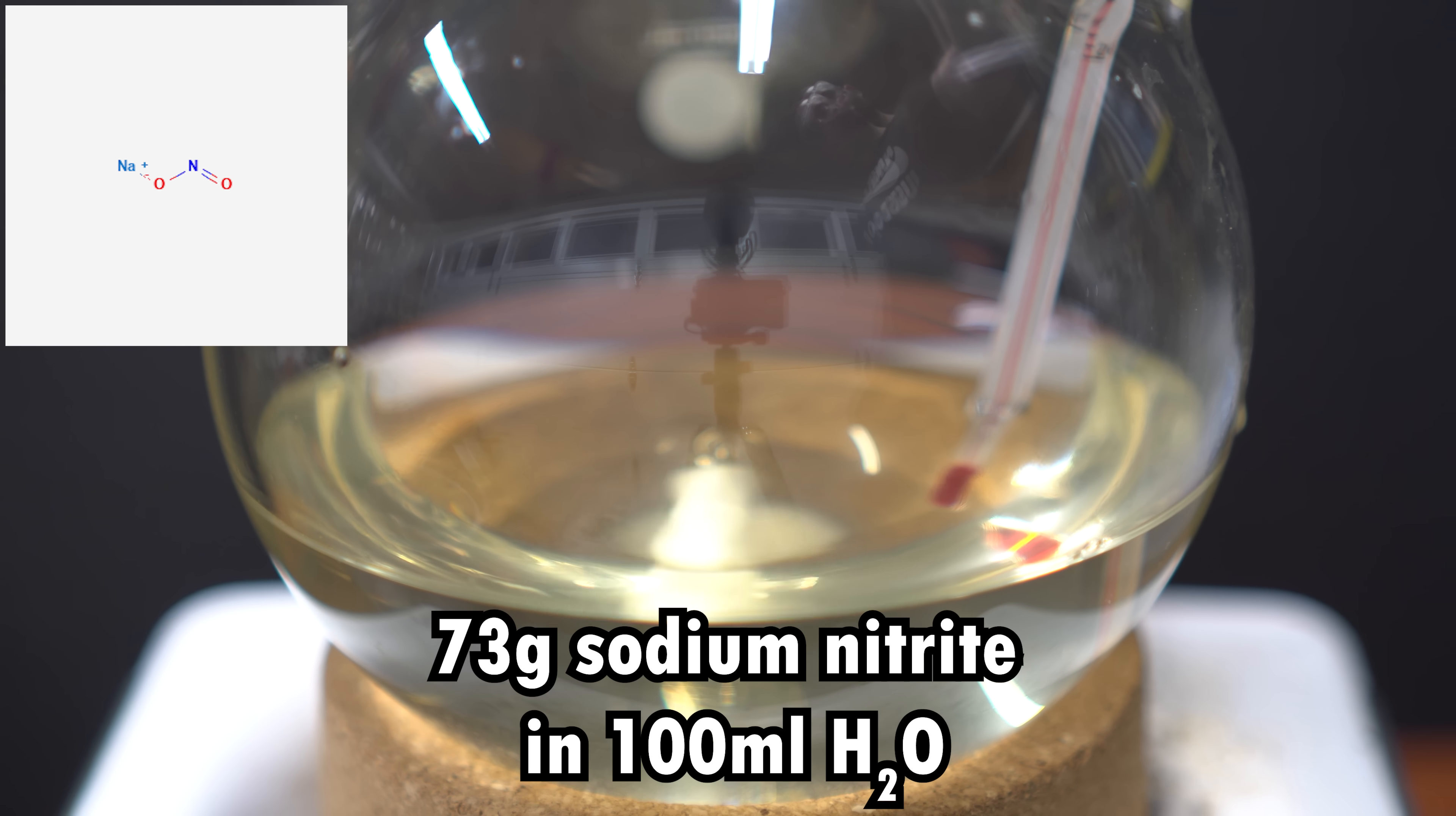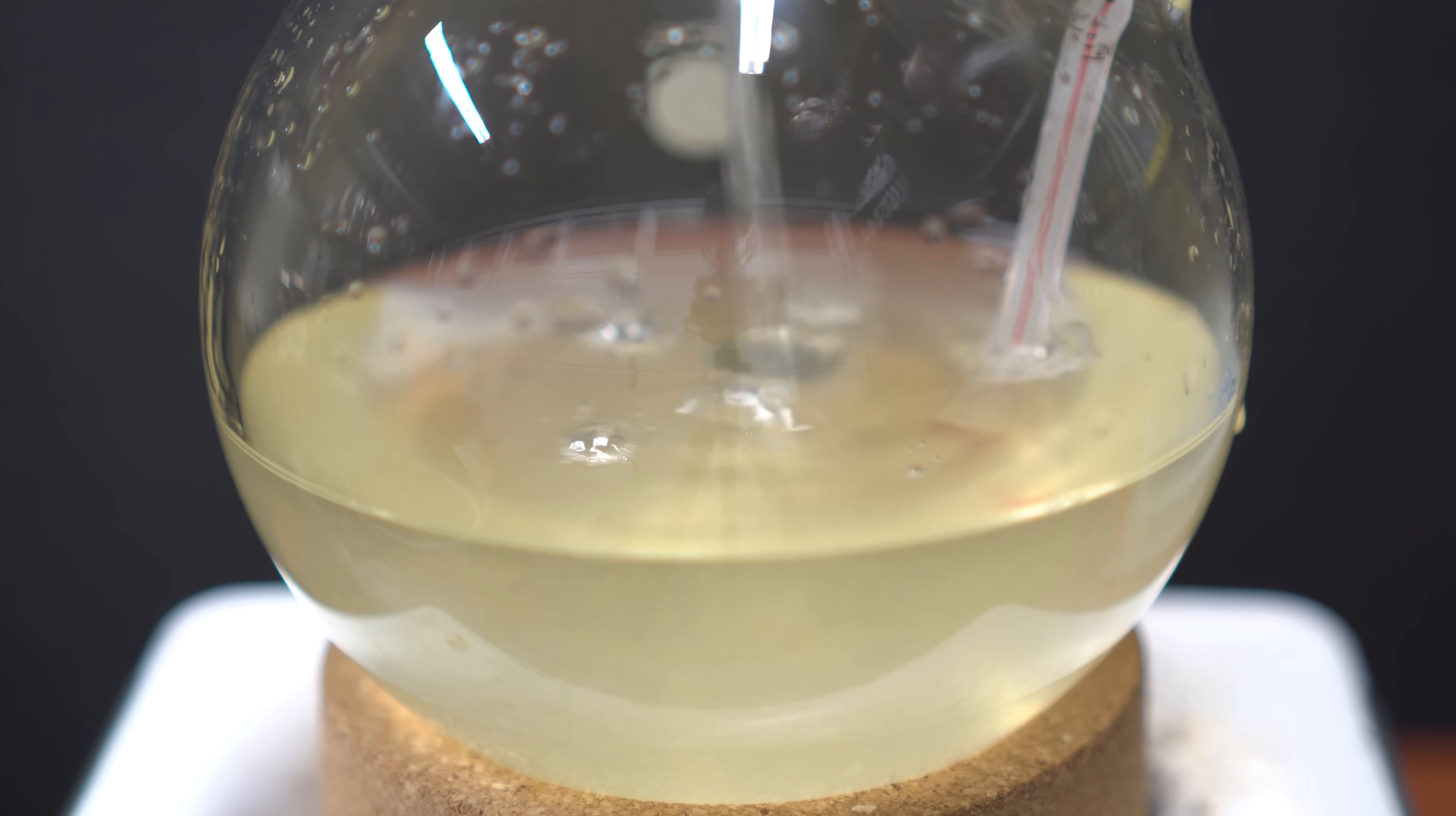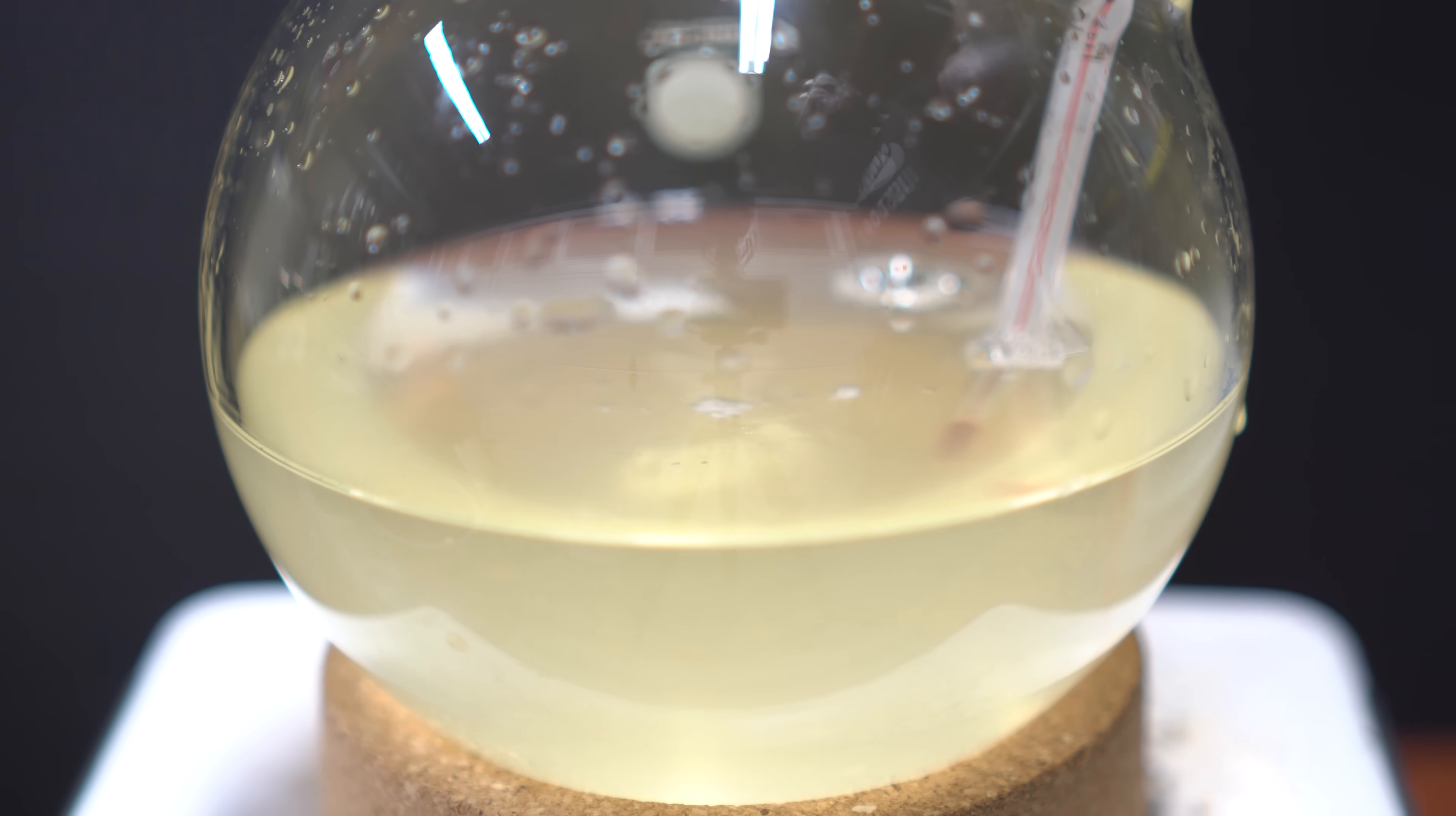We're now going to add in a solution of 73 grams of sodium nitrite and 100 milliliters of water. This is where the nitrite ion will do a SN2 reaction and kick out chlorine as a leaving group. There was no reason for me to add this in slowly, and I just dumped everything in. I made sure that the stirring was going, and I let it mix around for quite some time.